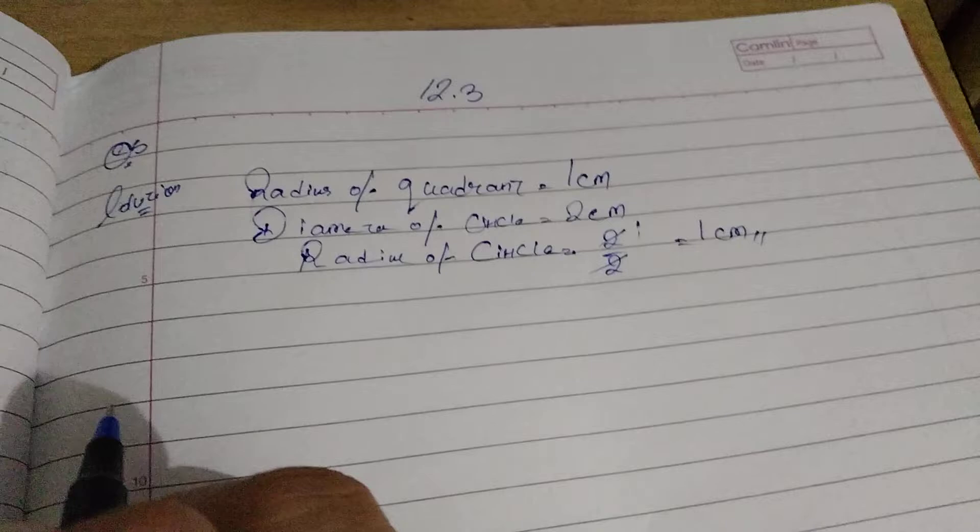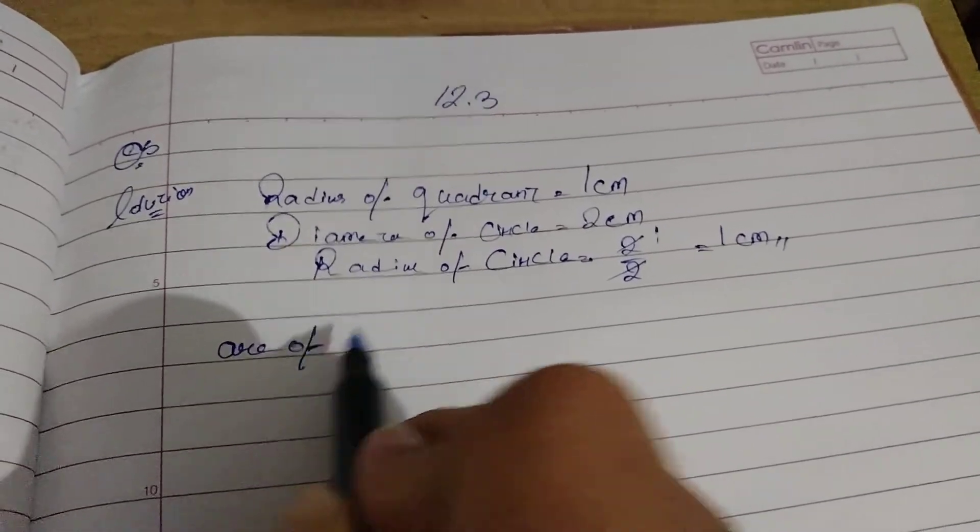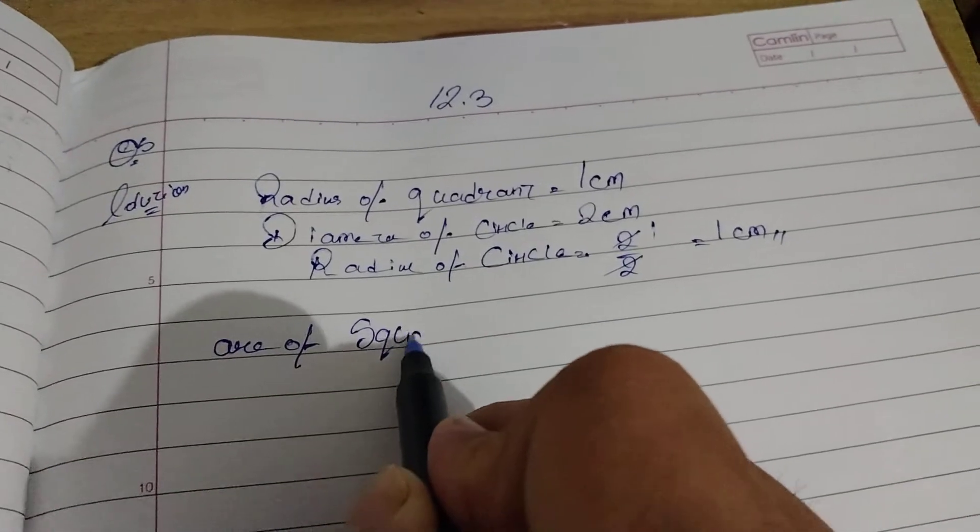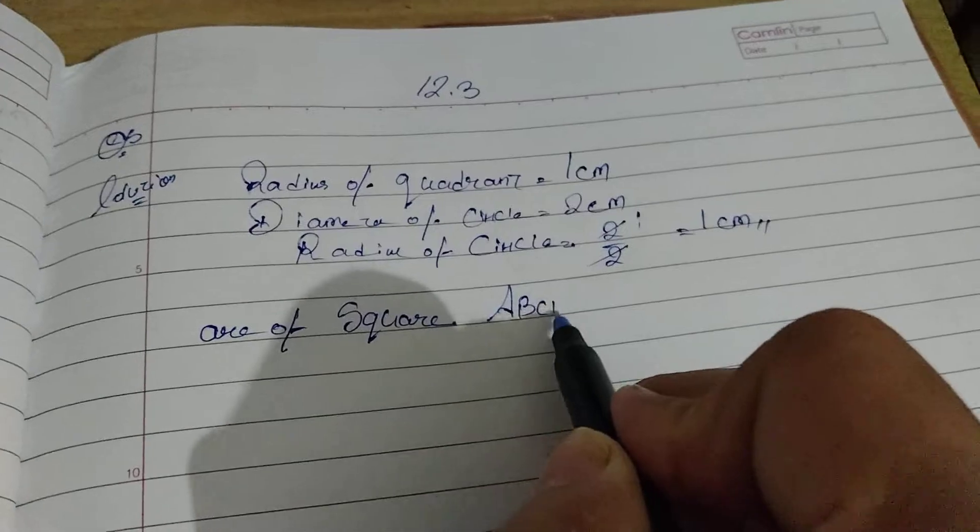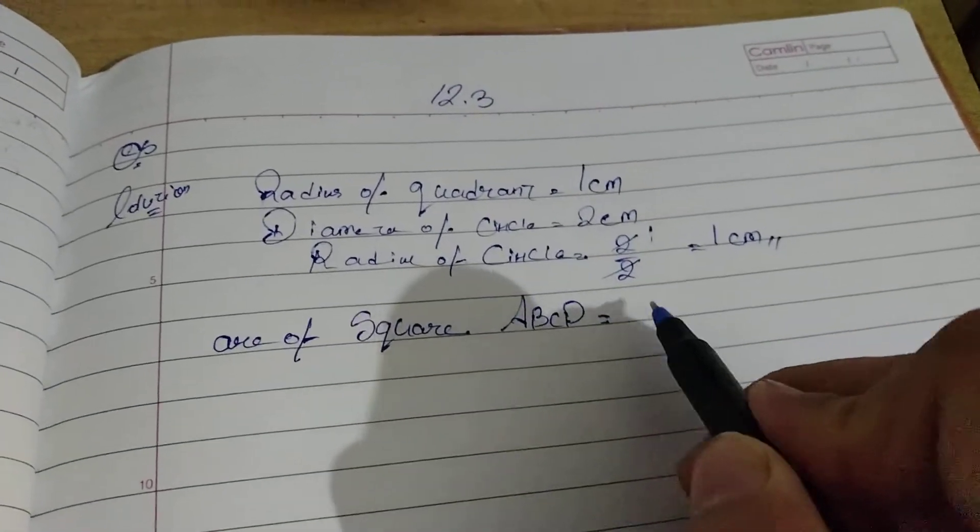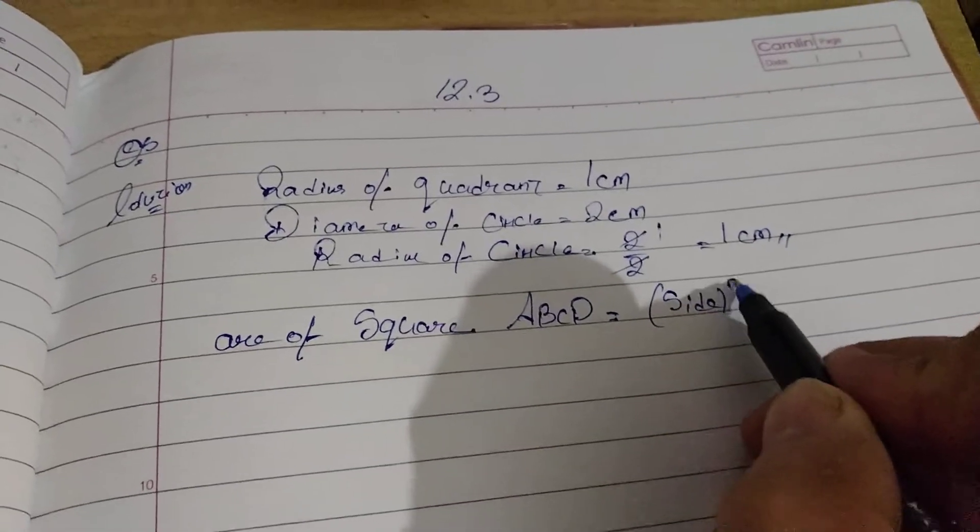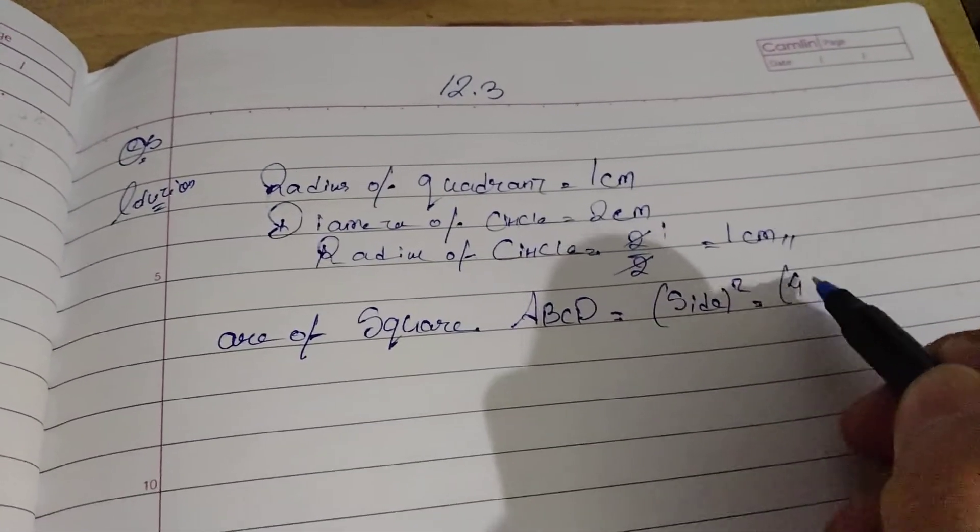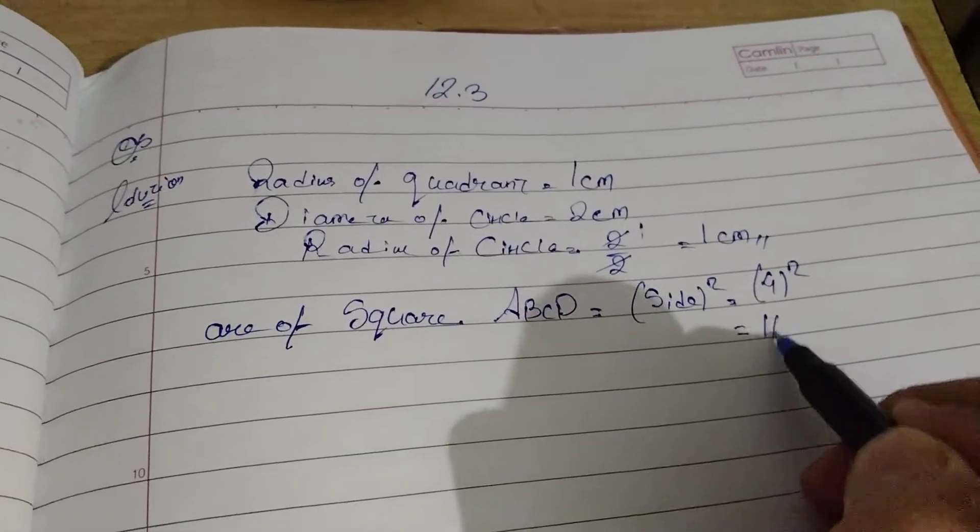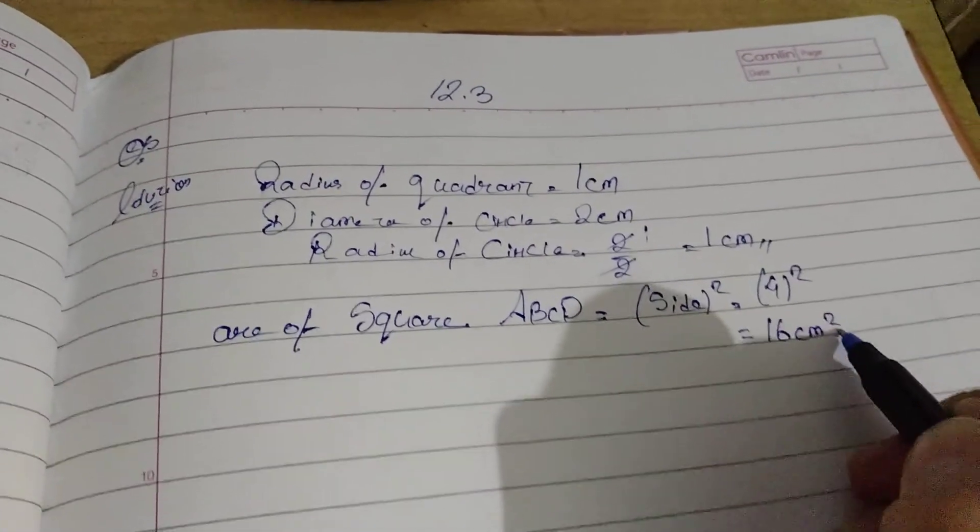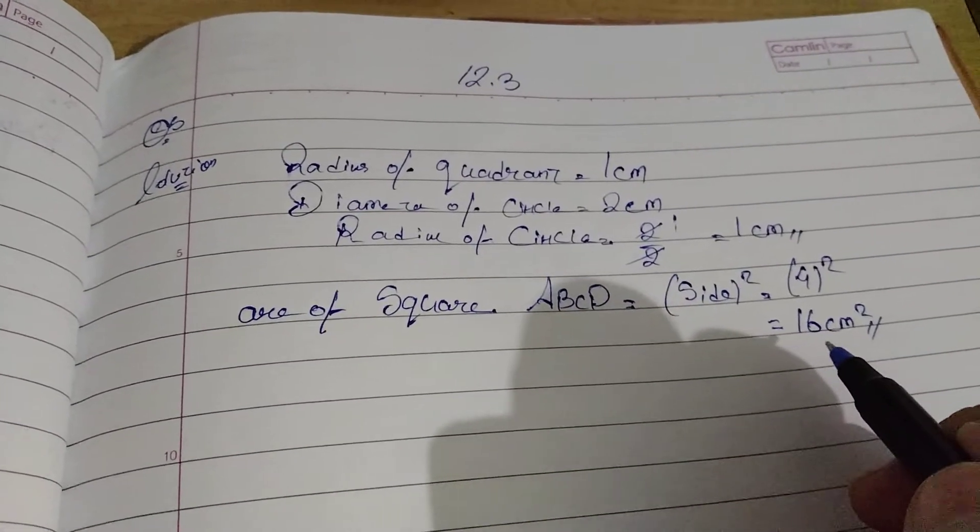Now, let's do area of square. In the figure, it's given as ABCD square. The formula for square is side square, equal to 4 square. So, 4 into 4 is 16 cm square.